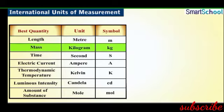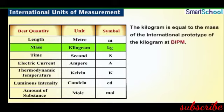Mass is measured in kilograms, denoted by the small letters kg. A kilogram is equal to the mass of the international prototype of the kilogram, a platinum-iridium alloy cylinder kept at the International Bureau of Weights and Measures in France.